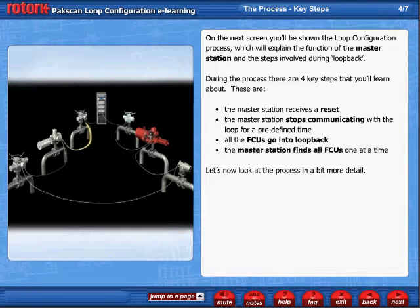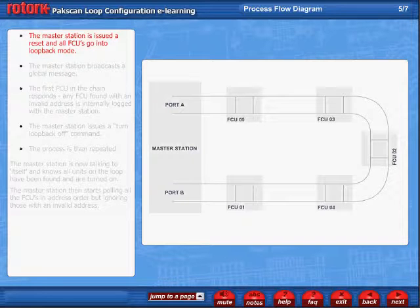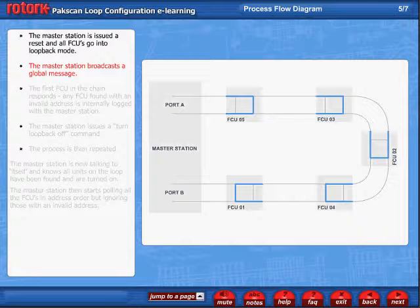Let's now look at the process in a bit more detail. The process starts when the master station is issued a reset and stops communicating with the FCUs. At this point, all the FCUs go into loopback mode. The master station now broadcasts a global message stating: respond if you are in loopback.